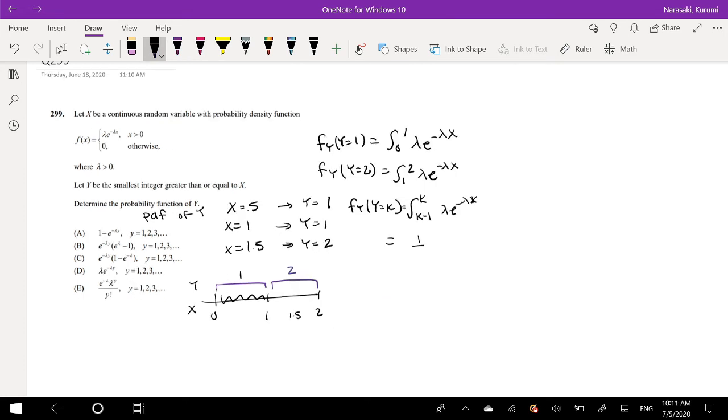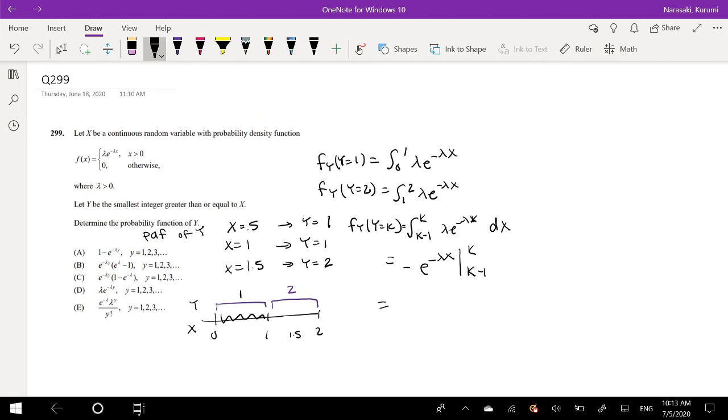Integral of this, so that's 1 over, it would just be e to the negative lambda x, negative, integrated from k minus 1 to k. So that's equal to, this is in respect to dx, by the way. Yeah. So then I would plug in these values to x. So that's going to be equal to k, minus minus, that's positive, e to the negative lambda x.